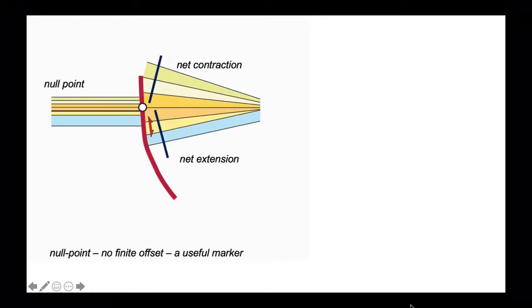Identifying a null point is a really useful thing to do. It provides a framework for understanding the net offset of markers between the hanging wall and the footwall.